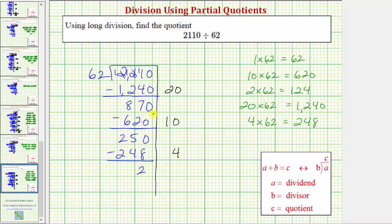This 2 is our remainder, and to find the quotient, we sum the partial quotients. So here we have 20 plus 10 plus 4, which equals 34, which means 2,110 divided by 62 equals 34 with the remainder of 2.